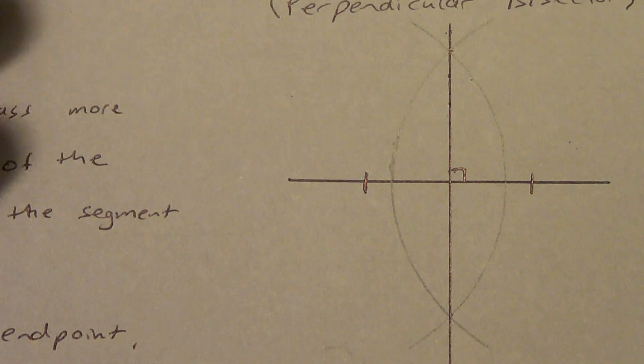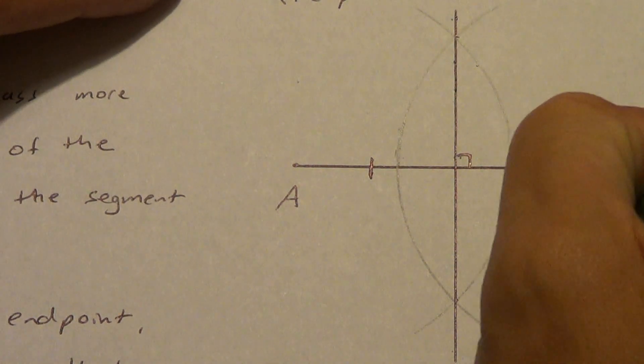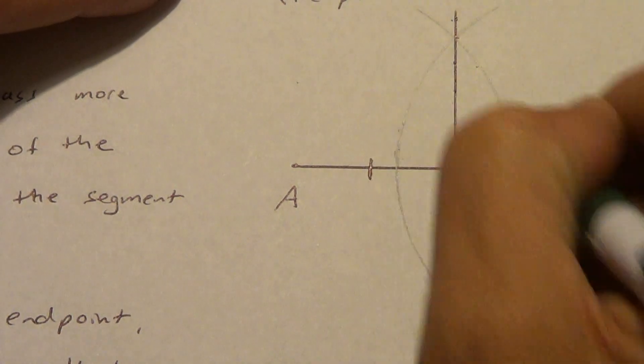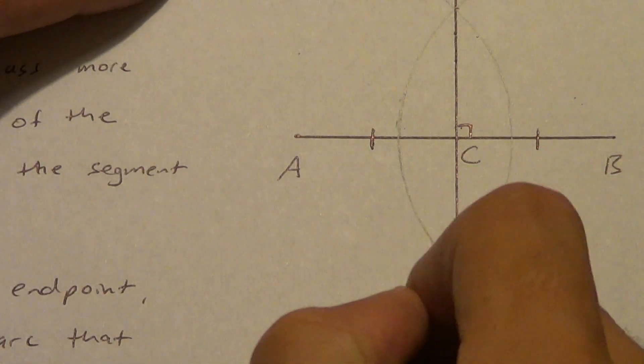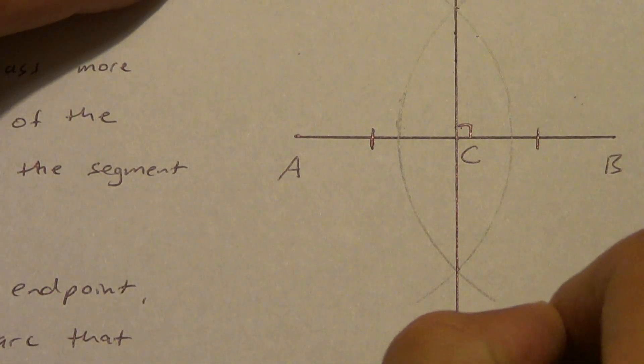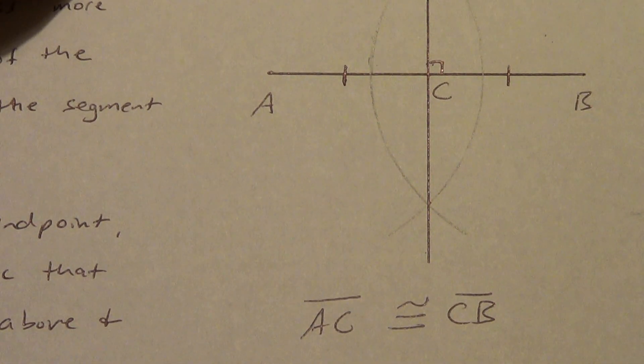If we want to put some letters on here, we might start with A on one end point and B on the other. And we'll call C that point we just created. A, C is congruent to C, B.